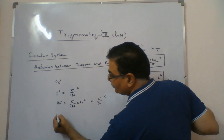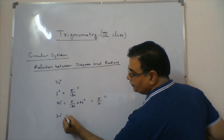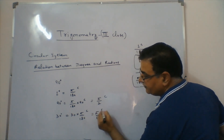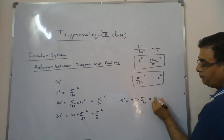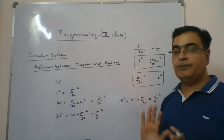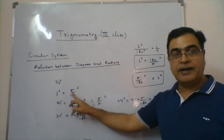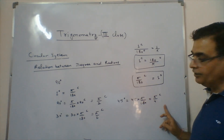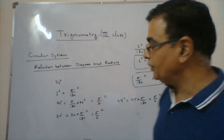If I say 30 degrees, then 30 degrees equals 30 × π/180 radians, which gives π/6 radian. If it is 45 degrees, then 45 × π/180 gives π/4 radian. So whenever a degree is given and you want to convert to radian, multiply by π/180.